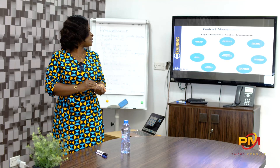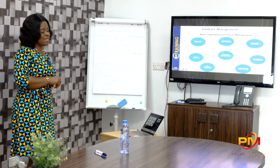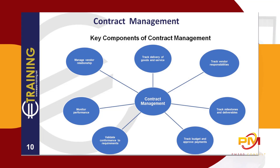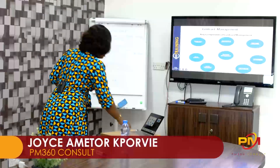Now let's look at the key components of contract management. On the screen you can see that tracking delivery of goods and services is a component, tracking vendor responsibilities is a component, tracking milestones and deliverables is a component, tracking budget and approved payments, as well as validating conformance to requirements, monitoring performance, and vendor relationship — all fall under contract management.